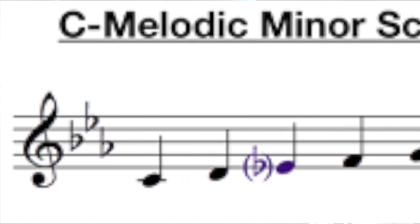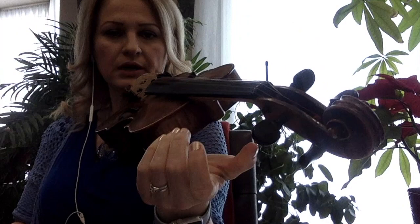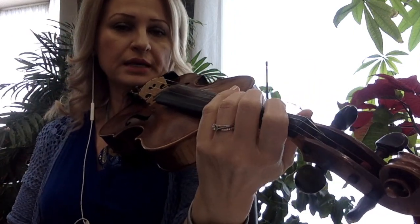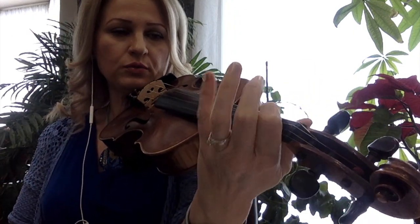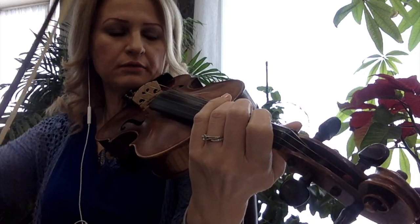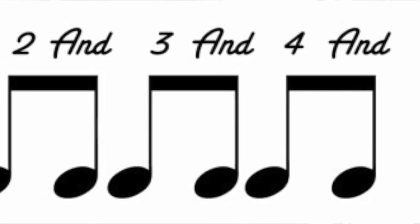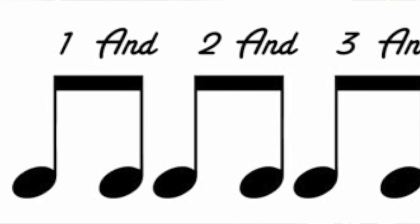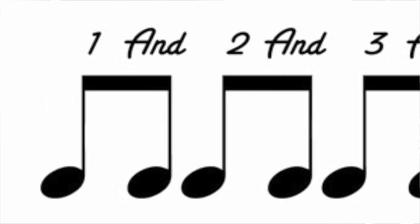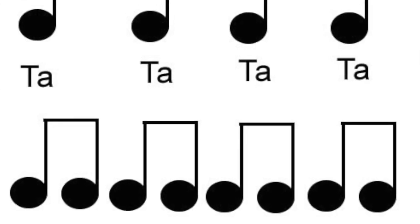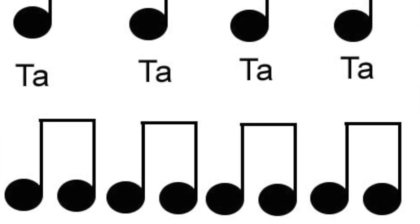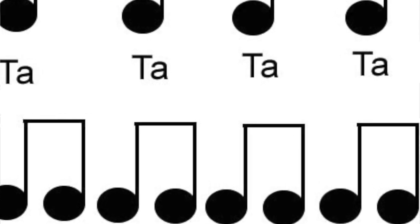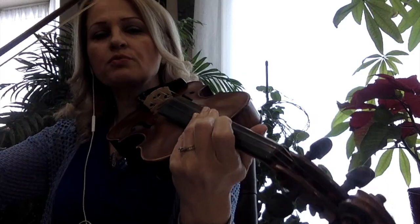I will demonstrate for you on the violin how we play those on the second octave. We start with the first finger and play the rhythm pattern ta ta ta ta — one note per bow, a quarter note on each bow.